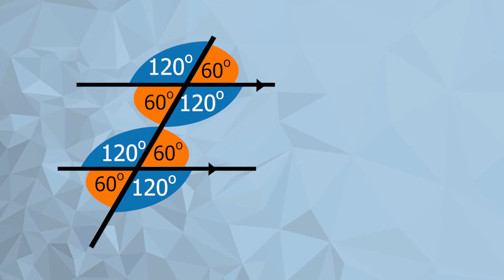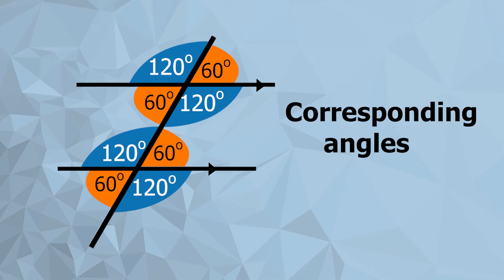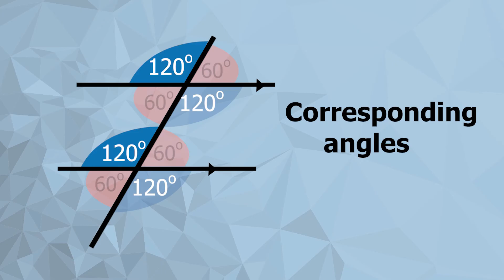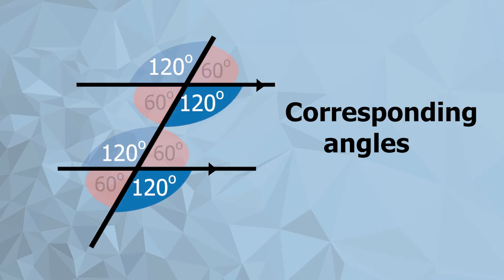You can see that a lot of the angles are the same. When we've got two angles that are in the same relative position, we call them corresponding angles. The two highlighted here are both on top of the parallel lines and on the same side of the diagonal line — they're in the same sort of position. They're on the same side of the diagonal line and in the same relative position of those parallel lines: corresponding angles.